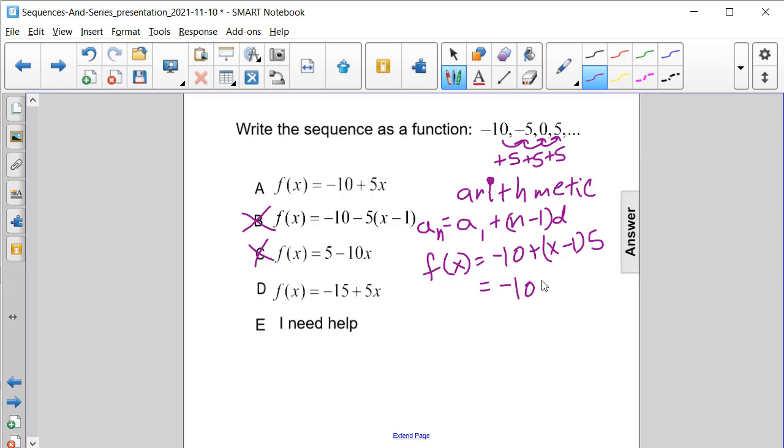We have negative 10 plus 5x minus 5, and we can combine our like terms and we'll get that the function f of x is equal to negative 15 plus 5x, which is answer choice D.